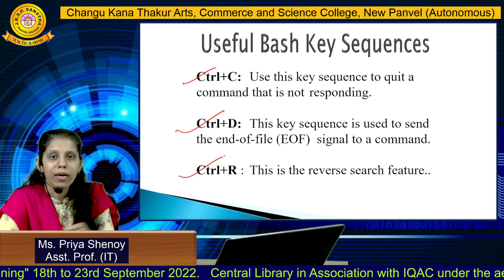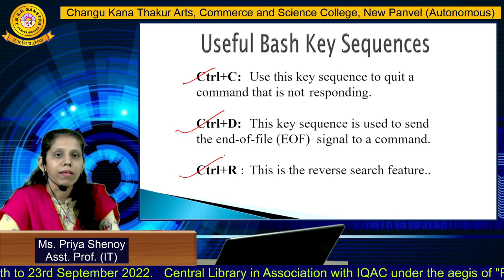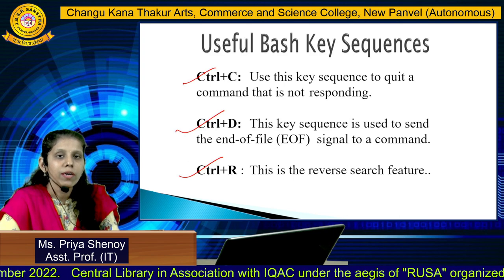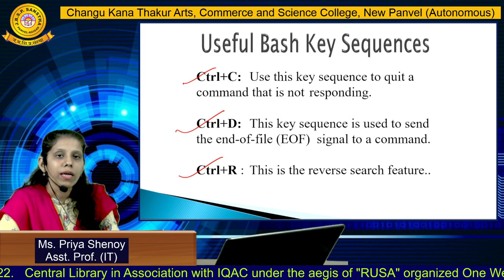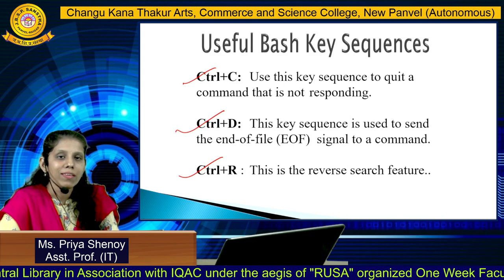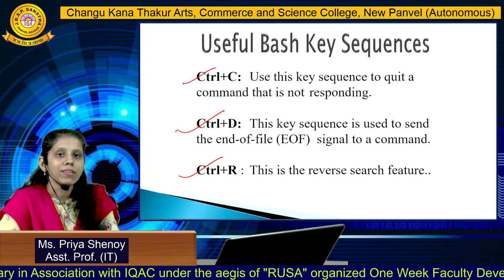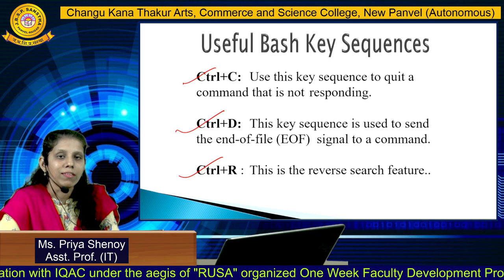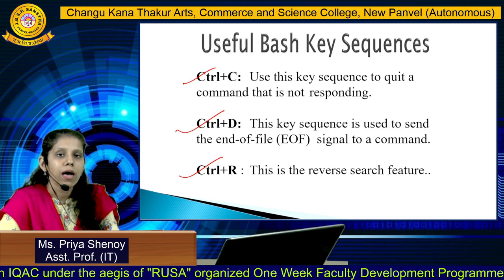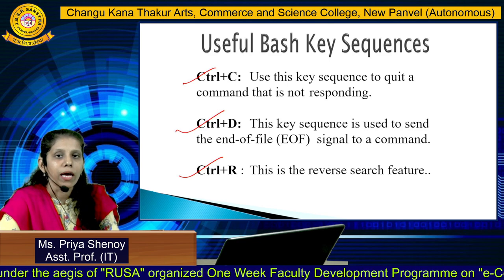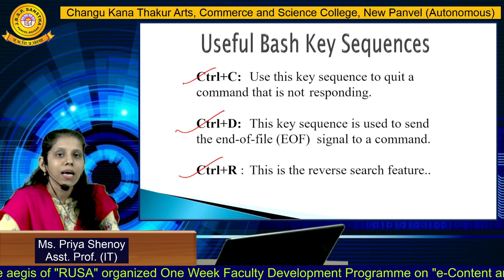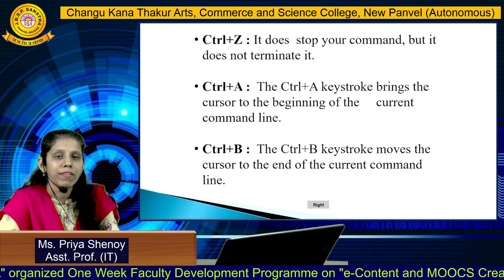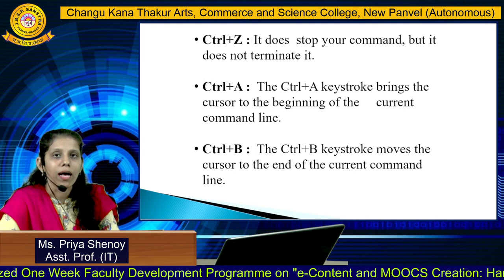The third shortcut key is Ctrl+R. Ctrl+R is used for reverse search, which means that commands you have previously given can be retrieved for re-execution using either the up arrow or down arrow key. All your commands are remembered by bash history and can be retrieved using Ctrl+R.